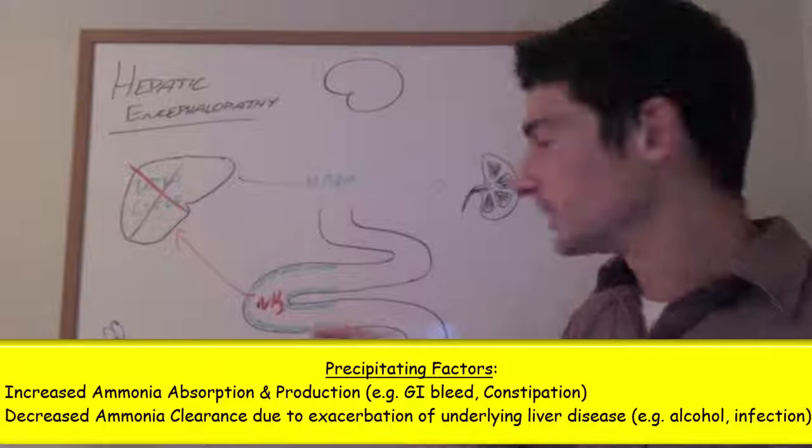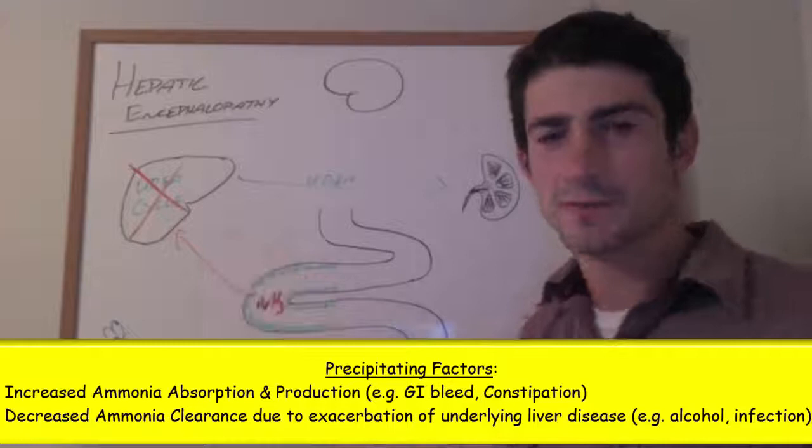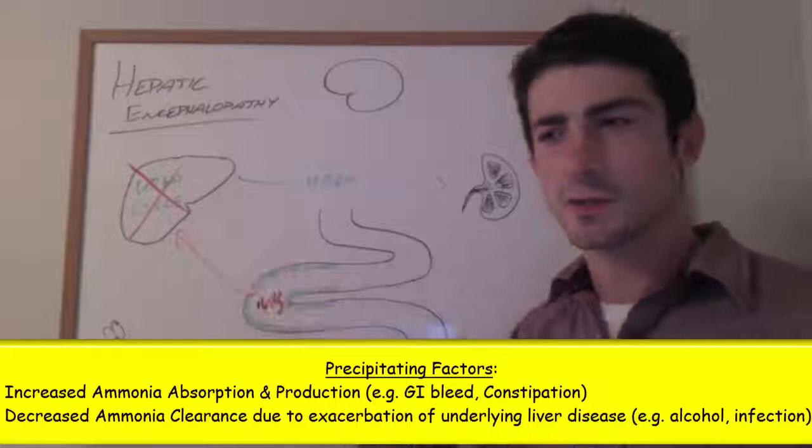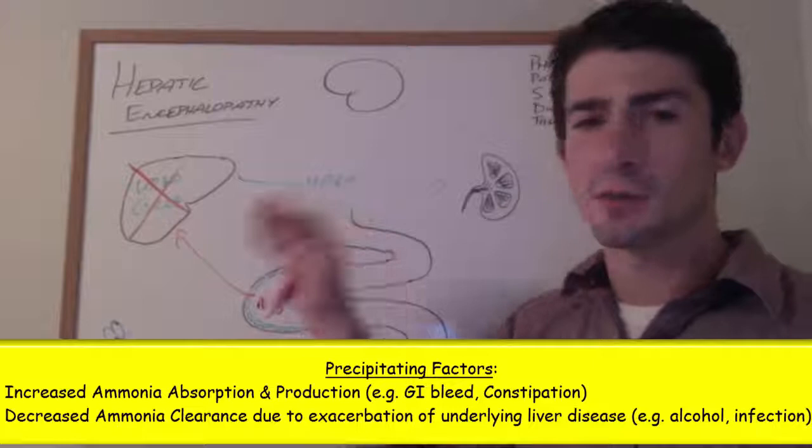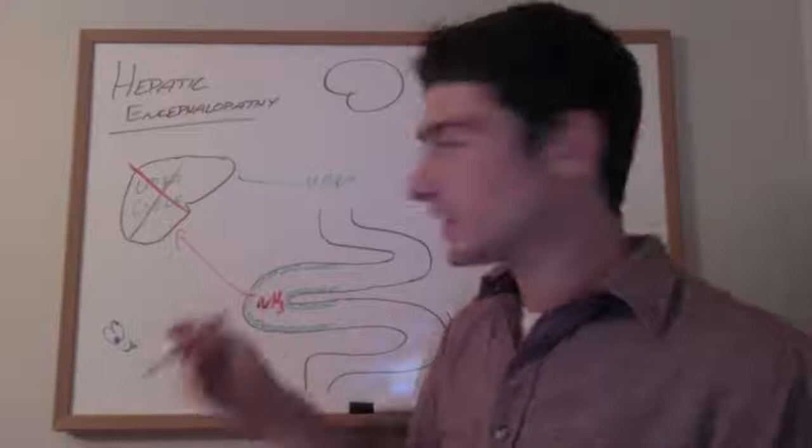It could be caused by severe constipation leading to decreased excretion and thus increased absorption of ammonia. It could also be caused by things that exacerbate the already damaged liver, like an acute infection or an alcoholic binge, something that further impairs the already damaged liver. Any of those lead to increased ammonia levels in the blood.